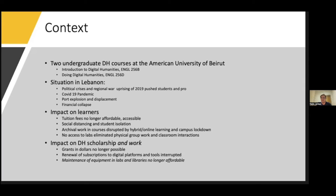The port explosion of August 4th, 2020 caused the displacement of so many families and students. And the last thing, which still persists, is the financial collapse, which has led to a number of crises impacting teaching and scholarship. The impact on learners was significant: tuition fees were no longer accessible, not all students had access to laptops — although AUB is an elitist university. Most importantly, electricity cuts due to lack of funds and fuel disruptions disrupted attendance and online learning collaborative assignments, and social distancing led to further isolation of students.